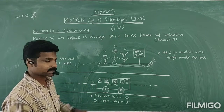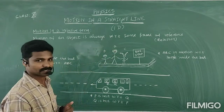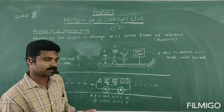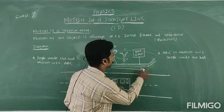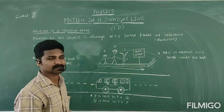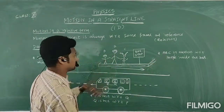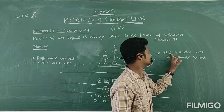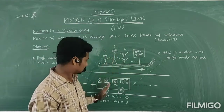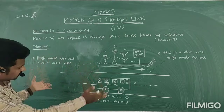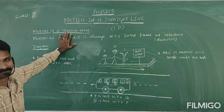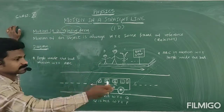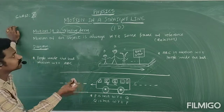Now you are travelling in the bus and some pupils are standing outside at the bus stop. When the bus crosses those people, what do you feel? Actually you are moving, but you feel they are moving backwards. You are comparing the bus with the pupils. The people at the bus stop are in motion with respect to the passengers inside the bus. This kind of comparison is known as relative motion — we have to relate something to describe motion.